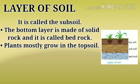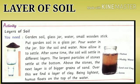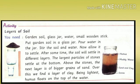Plants mostly grow in the topsoil only. For an activity about layers of soil, you need garden soil, a glass jar, water, and a small wooden stick. Put garden soil in the glass jar, pour water into it, and stir the soil and water. Allow it to settle. After some time, the soil will settle in different layers. The largest particles of stone settle at the bottom; above the stones is a layer of bigger grains of sand; over this we find a layer of clay; and humus floats on the top of the water.